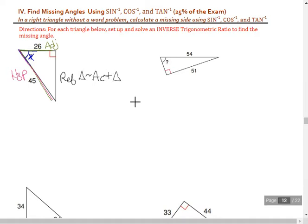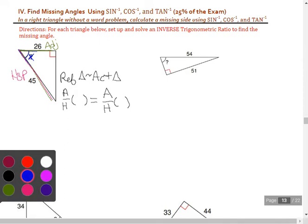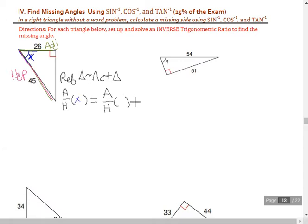So in terms of setting up our work, we have the adjacent and hypotenuse to work with. Let's start with the reference triangle and the actual triangle. We know those are similar, so we can pull ratios that we know are going to be the same.